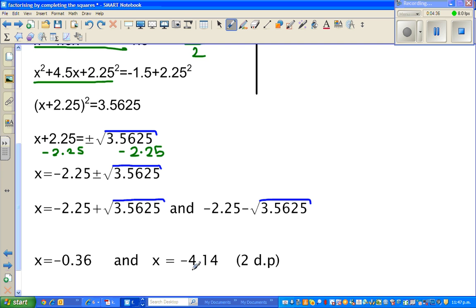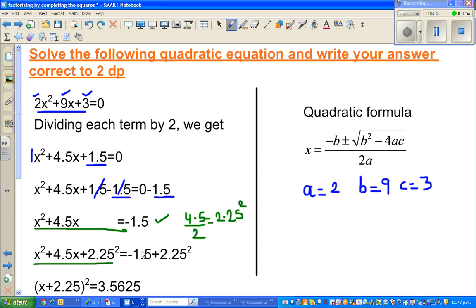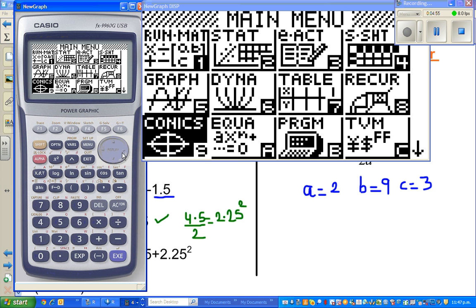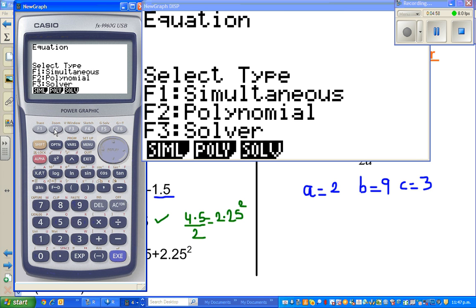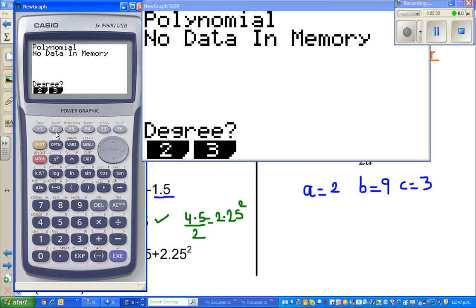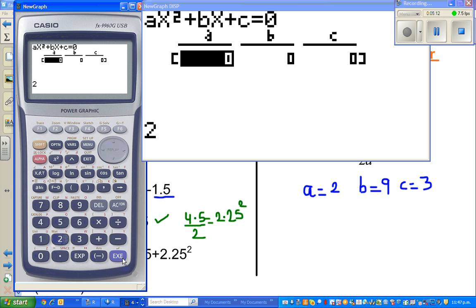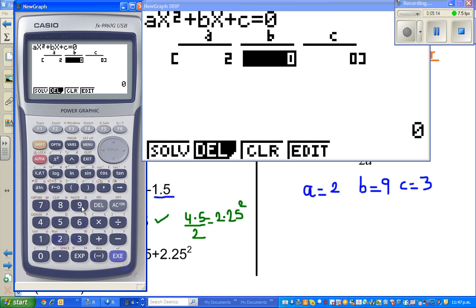Now, how to do this on a graphic calculator? I'll show you two different ways to check your answer. One way is to go to equation. This is a polynomial, a second-degree polynomial. You can see here a is 2, b is 9, and c is 3.